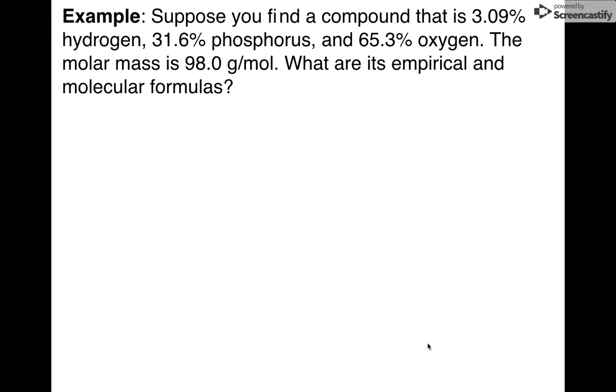All right. Let's try another one. This one's a little bit more complicated. I have 3.09 percent, but remember, we're going to change it to grams, of hydrogen. I have 31.6 grams of phosphorus, and 65.3 grams of oxygen. Molar mass is supposed to be 98. What are the empirical molecular formulas? Let's go through this.